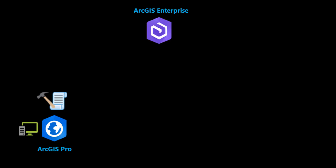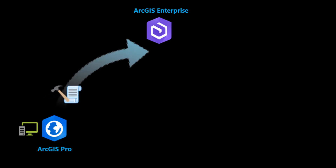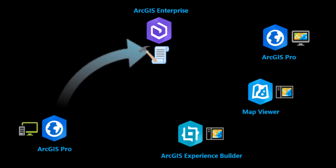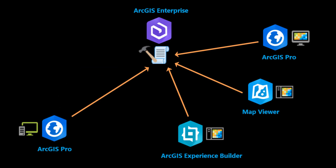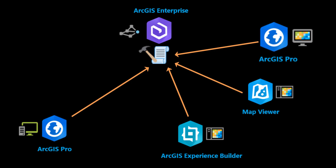Hi, this is Tim at Esri. In this video, we'll share a web tool. A web tool starts as a custom model tool or script tool that you create in ArcGIS Pro. You share it to your enterprise portal in a way that's similar to sharing a web map. When the tool is in the portal, different client apps can connect to it and run it. The processing is done on the server, and the results are sent to the client app — for example, ArcGIS Pro.